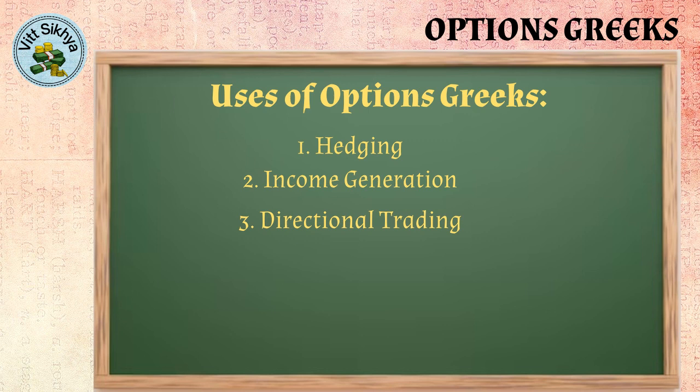Option Greeks can also be used to make directional bets on the stock market. For example, if you believe the market is going to decline, you could buy put options on a broad market index such as Nifty 50. They can also be used to manage risk — for instance, if you are buying a call option, you could sell a put option with the same strike price and expiration date, which would reduce your overall risk but also reduce your potential profits.